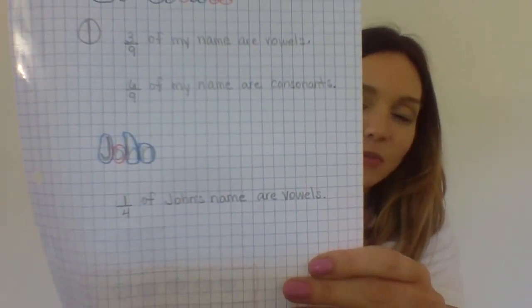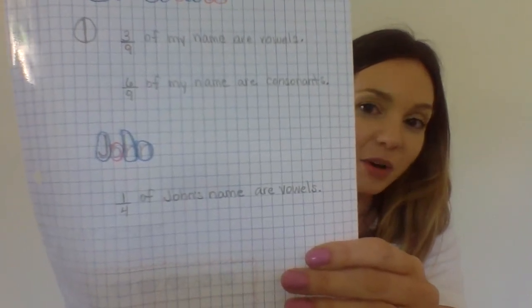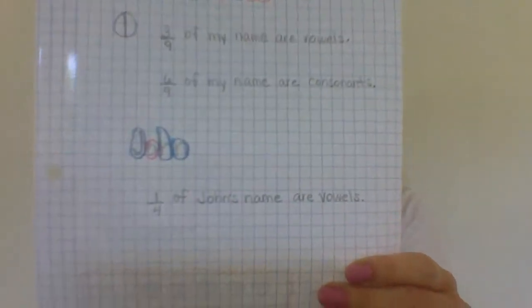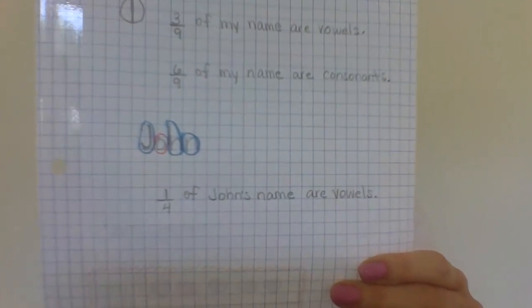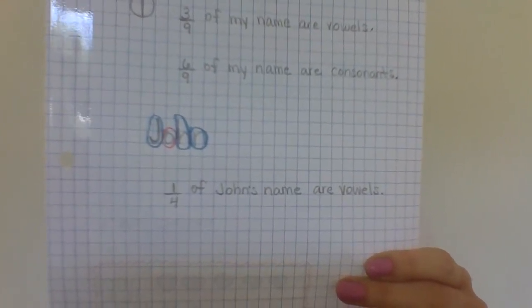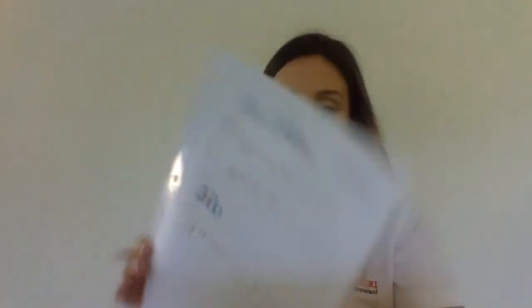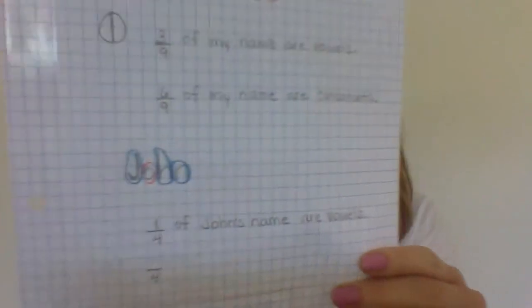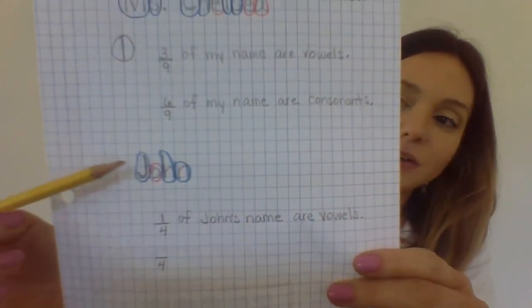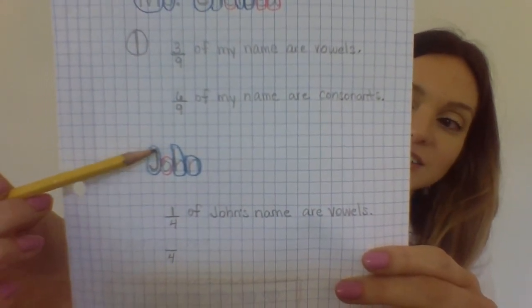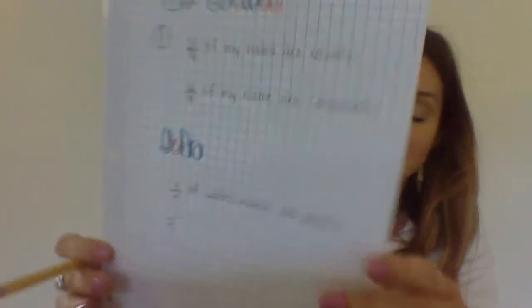How many of John's name are consonants? The total number of letters did not change, so my denominator will not change — it will remain four. But the numerator has changed, because now instead of counting vowels, I want to count the consonants. There are three consonants. So three-fourths of John's name are consonants.